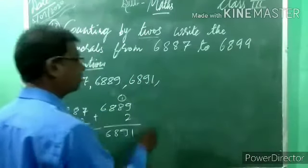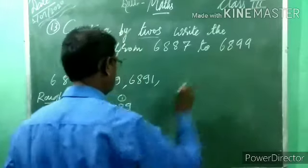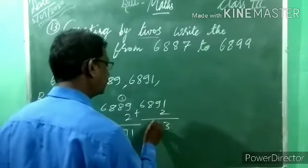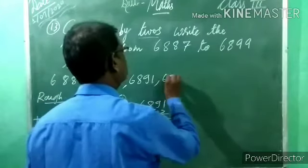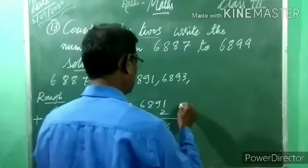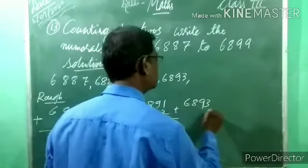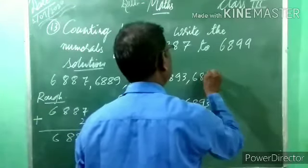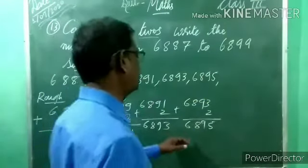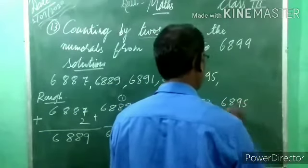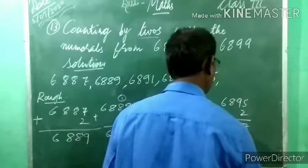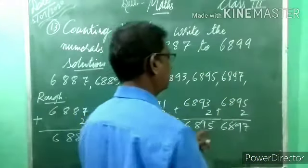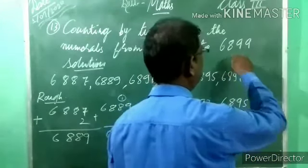Now, 6,891. We have to go up to 6,899. So 6,891 plus 2: 1 plus 2 is 3, 9, 8, 6 — so 6,893. Write 6,893. We are not yet at 6,899. Again, 6,893 plus 2: 3 plus 2 is 5, 9, 8, 6 — so 6,895. Write 6,895. We have not yet got that number, so continue the process until we get 6,899.